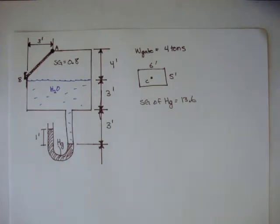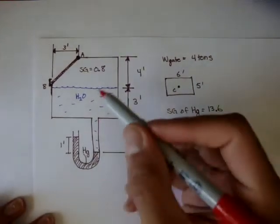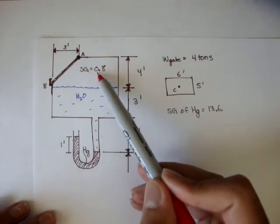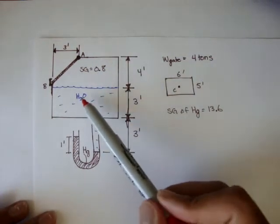In here, we actually have a tank. We have a tank here, and it's holding some unknown liquid with a specific gravity of 0.8, and the second liquid is water.